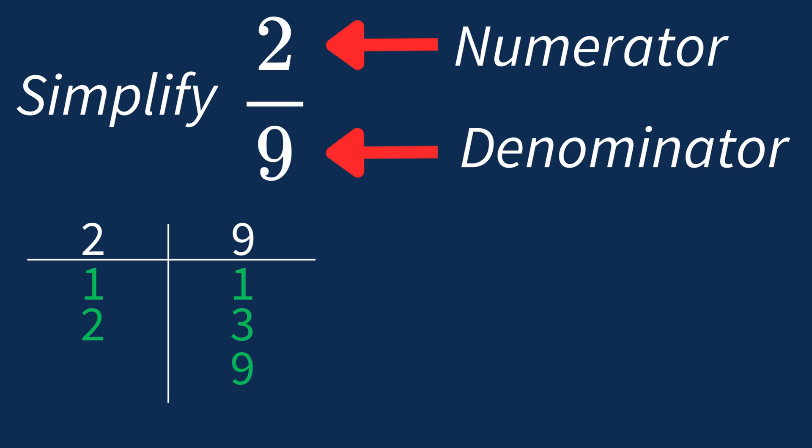So in this case, the largest common factor is 1. This means we'll divide both the numerator and denominator by 1 to see if anything changes.